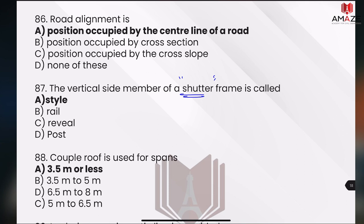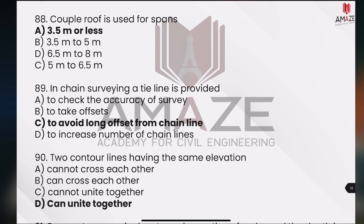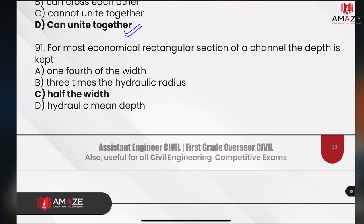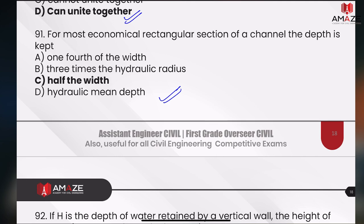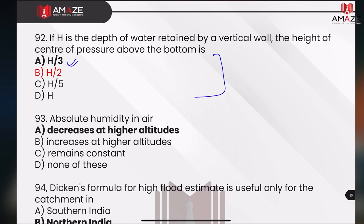That is a style answer, right? Now if you look at the frame in the post — actually, this is a previous one. If you look at the previous one, the answer is a style. Shutter frame is the same. Now this is the direct one — half the width of the economical section. I have asked the answer for repeat questions — H by 3. The answer is H by 3.